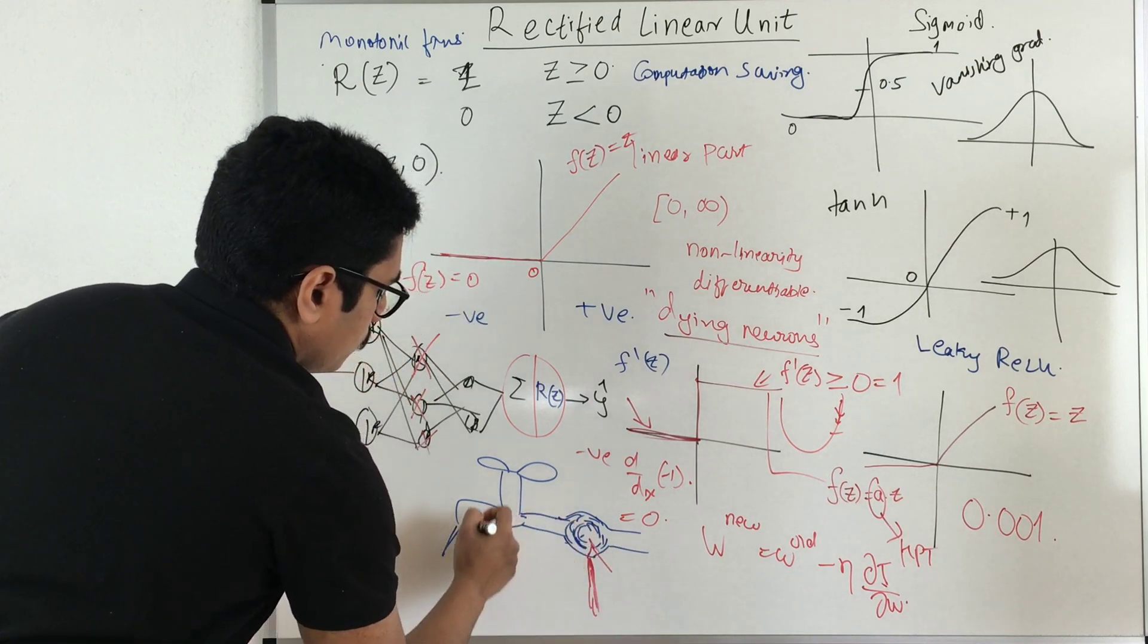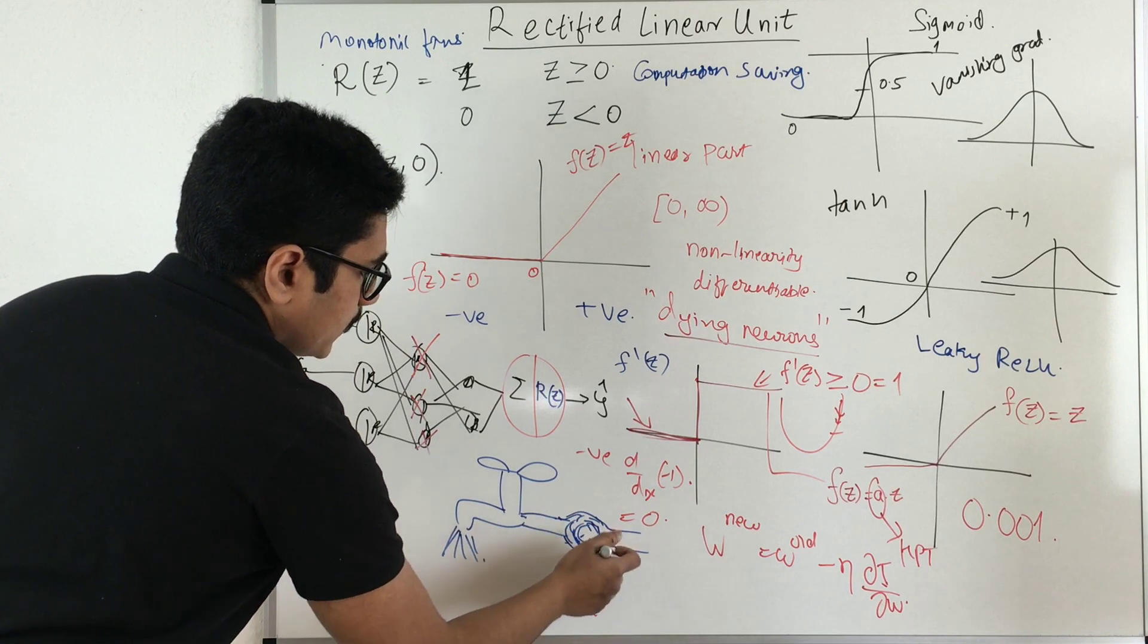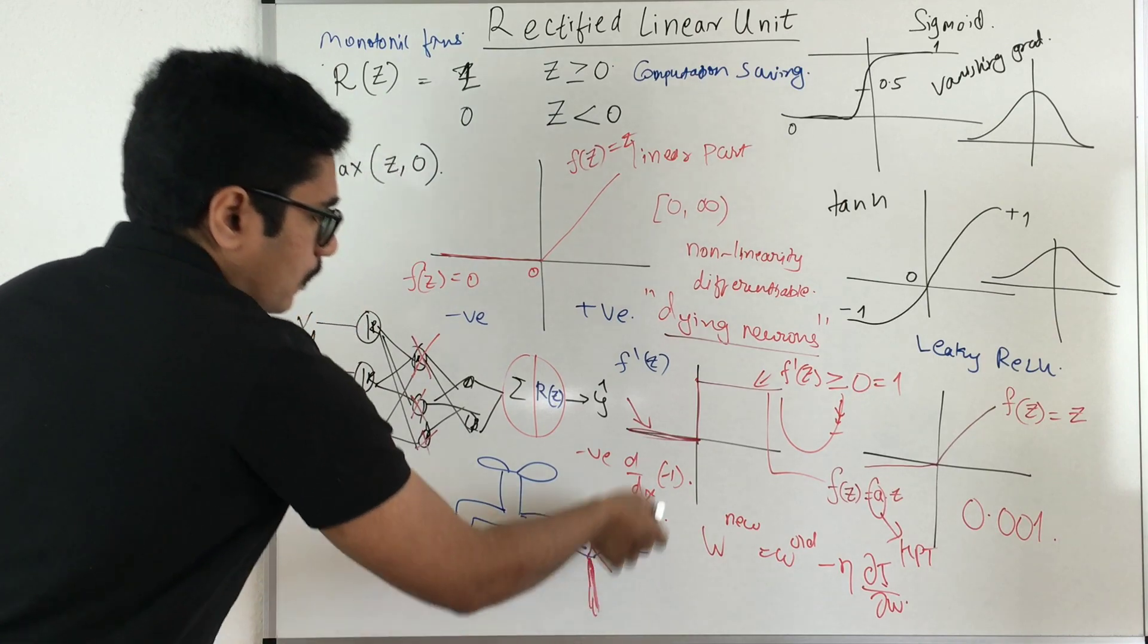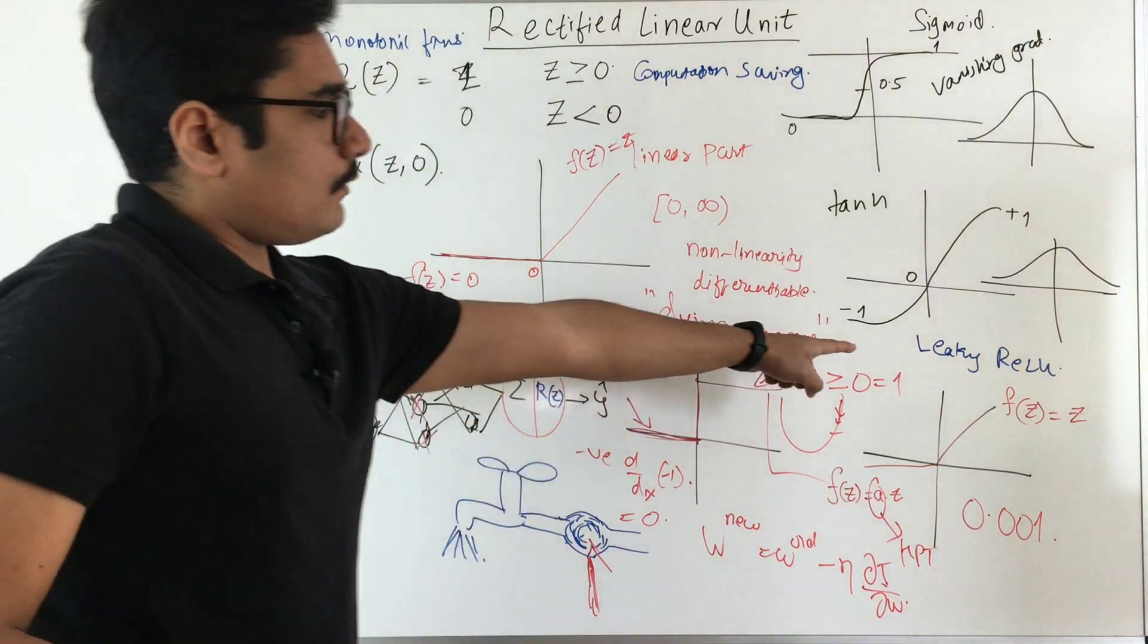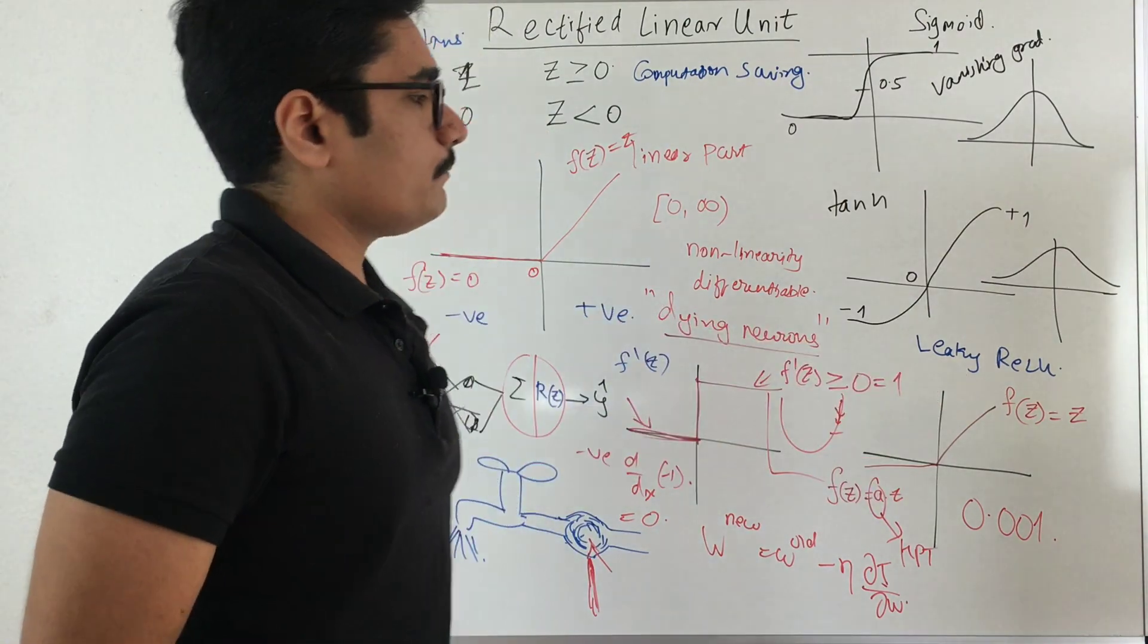So what leaky ReLU does is it will dig a hole into this and it will start leaking some water so that it saves from this particular portion. So you get the output from this end as well, but here this dying neuron problem is also eliminated in this. So that is the major goal of why we use the leaky ReLU.